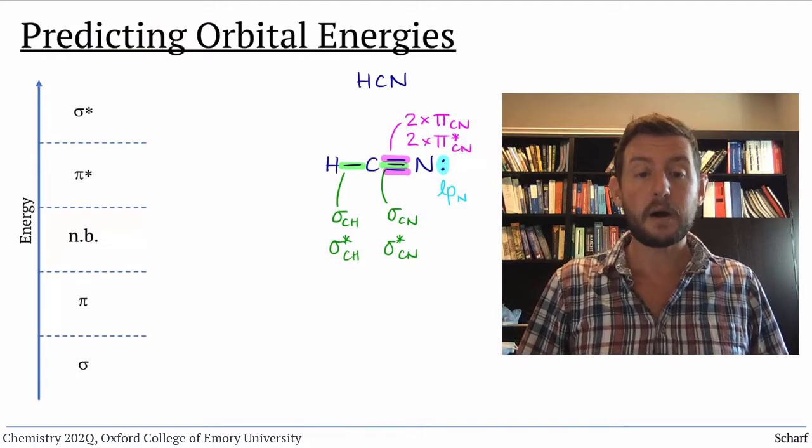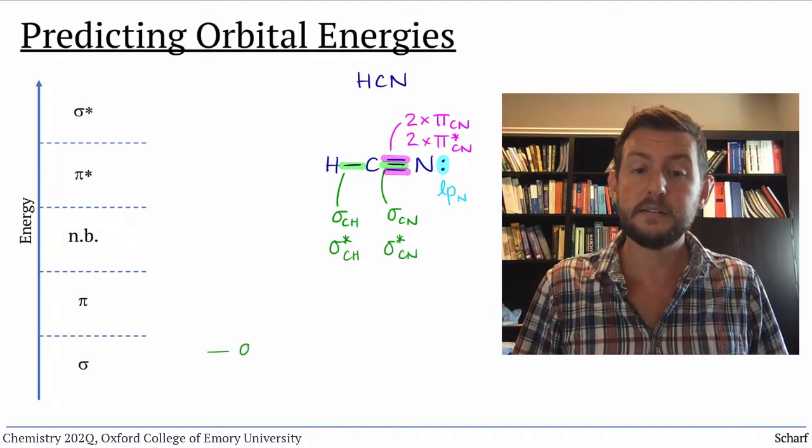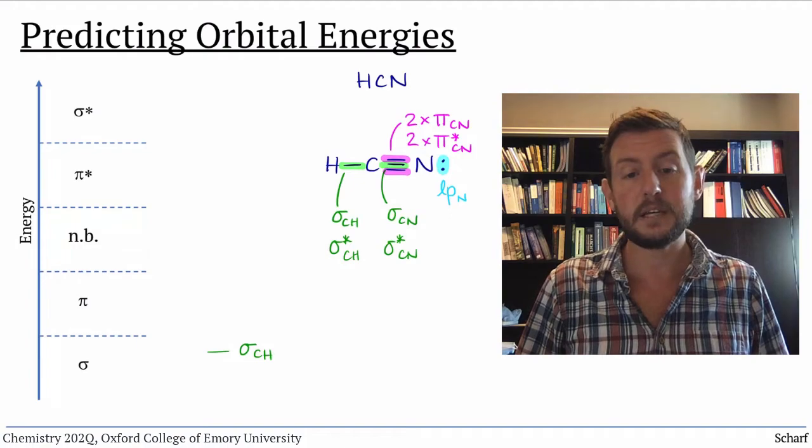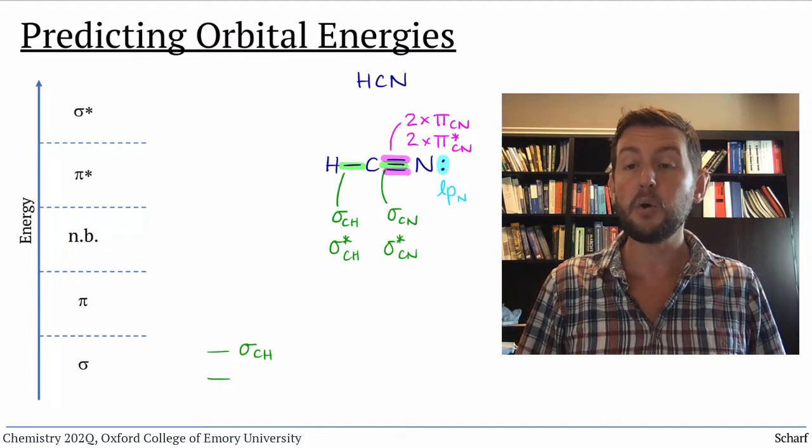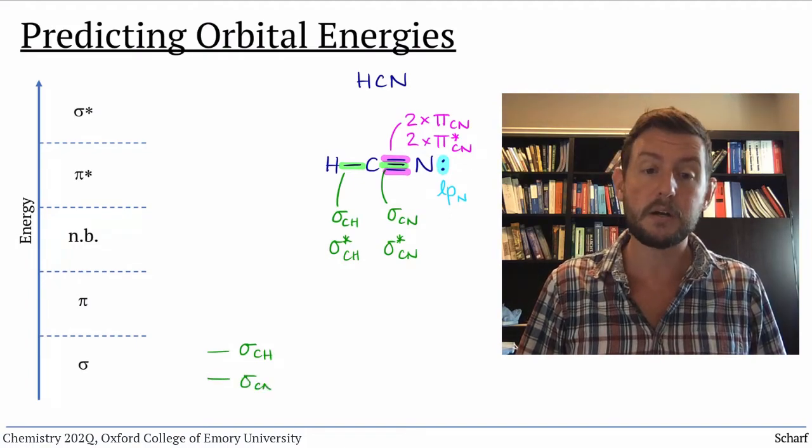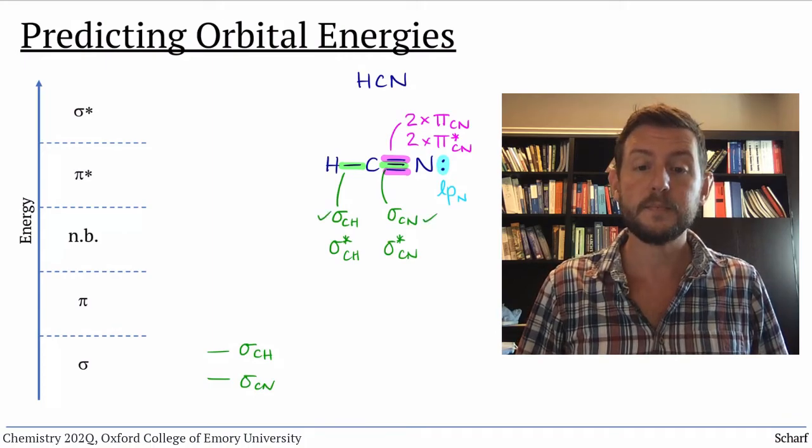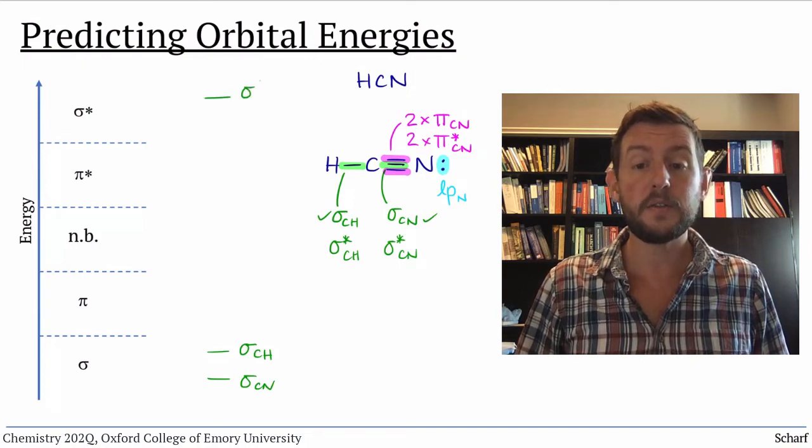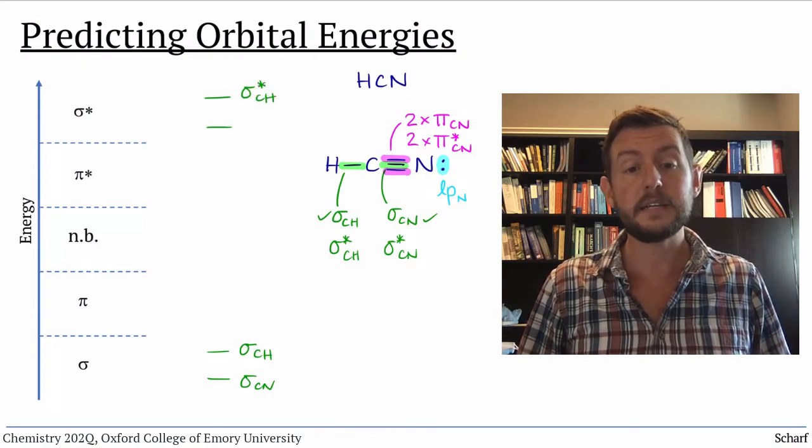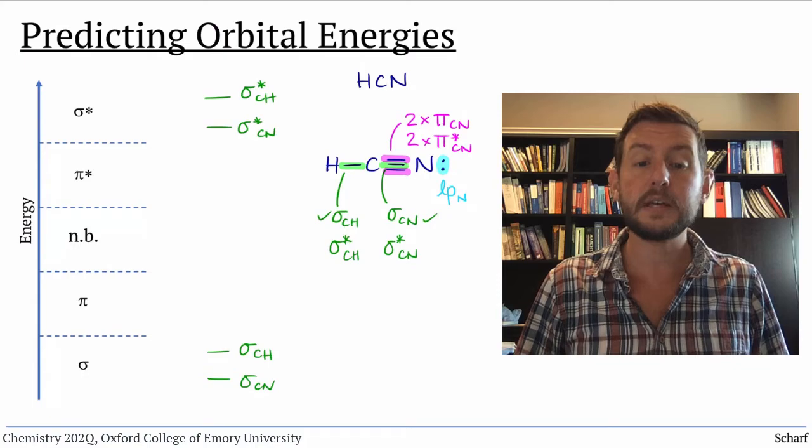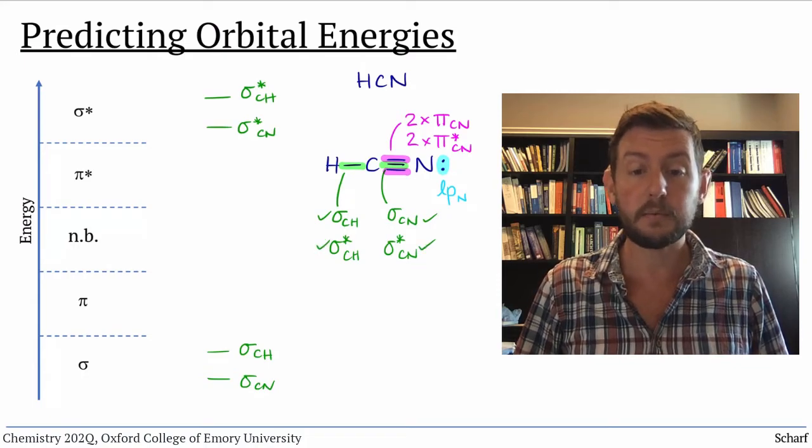The sigma bonding orbitals are the lowest in energy, and CN sigma will probably be slightly lower in energy than CH sigma, because N is more electronegative than H. The two sigma star orbitals also follow the same trend. CN sigma star is lower in energy than CH sigma star for the same reason.